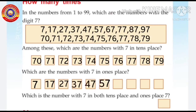57, 67, 77, 87, and 97. Third question: which is the number with 7 in both tens and ones place? Look here, look at the numbers. Yes, 77, 77, 77.